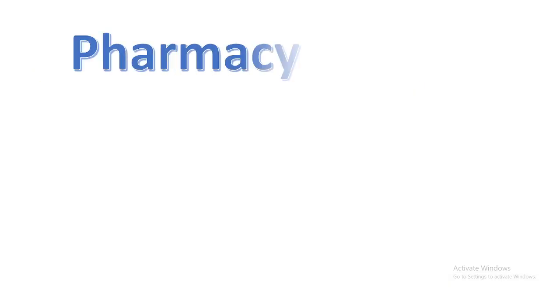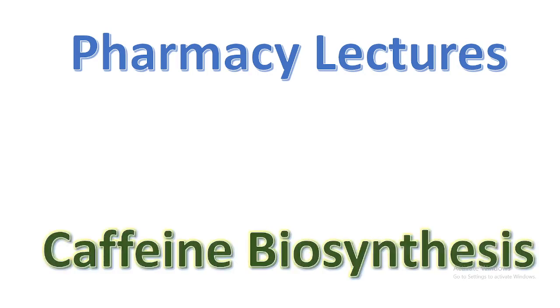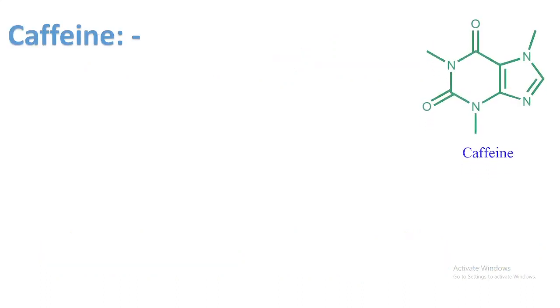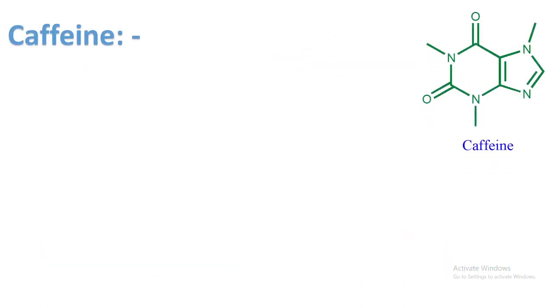Hello everyone, welcome to pharmacy lectures. Today we are going to discuss caffeine biosynthesis, or how plants produce caffeine. First, let's see the structure of caffeine. Here we can see the structure of caffeine is composed of two electrocyclic rings.